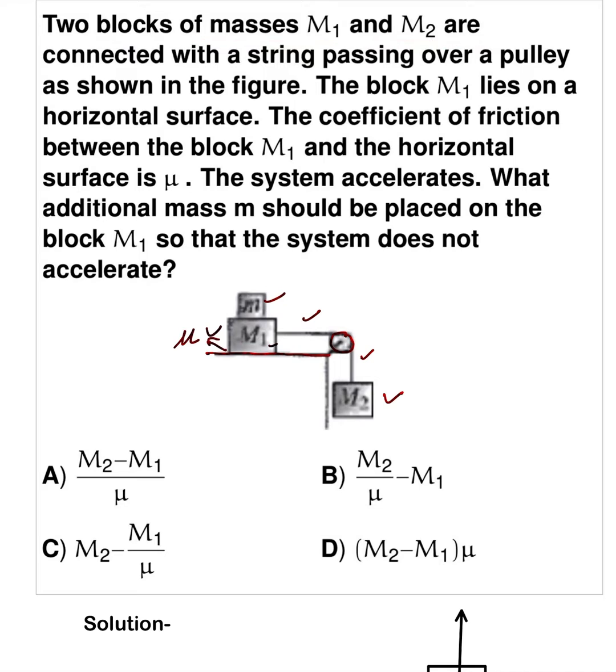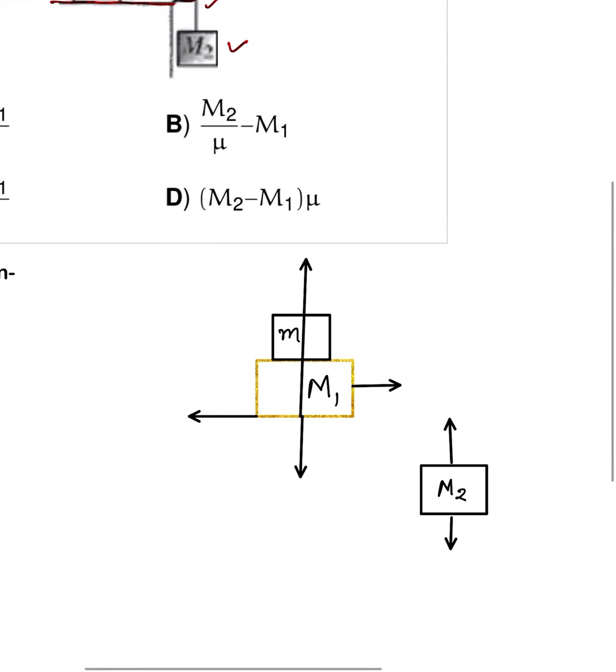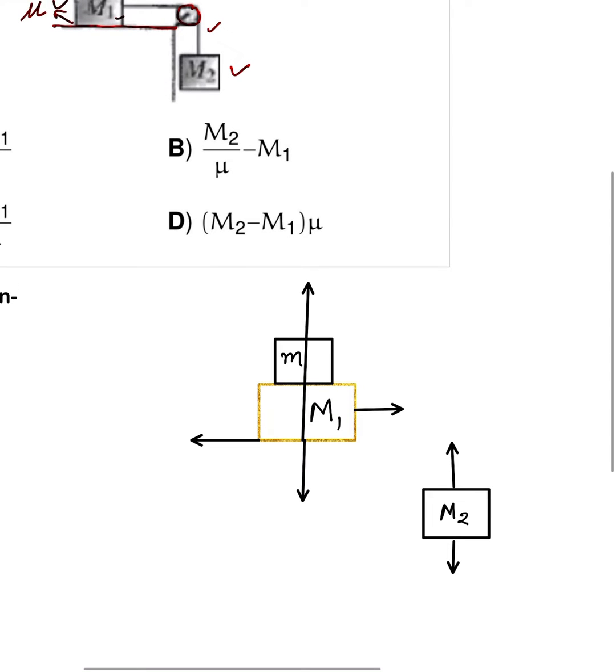First, make the free body diagram of each block - M2 and M1 plus small m. In the rest condition, the acceleration of each block is zero. Net force is zero.